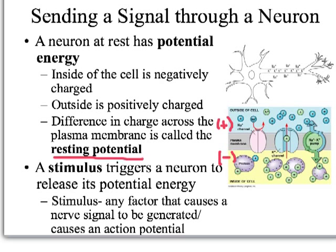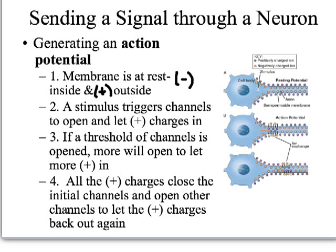In order for a neuron to send a signal, a stimulus has to trigger it — the stimulus causes the nerve cell to generate what's called an action potential. Any input that a nerve signal gets is a stimulus. If a nerve signal receives a stimulus or an input from either receptors or other neurons, it's going to release that potential energy and we get an action potential. When neurons send a signal, it's called generating an action potential.